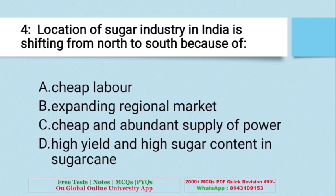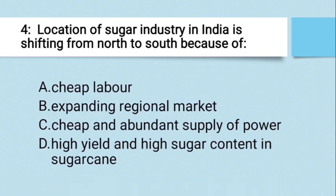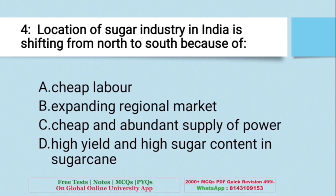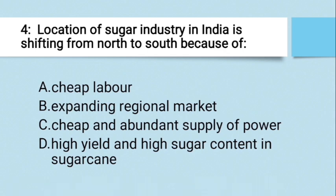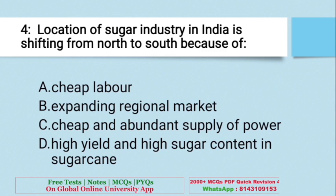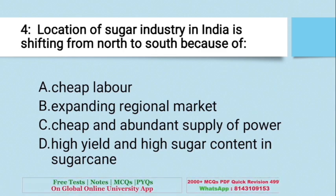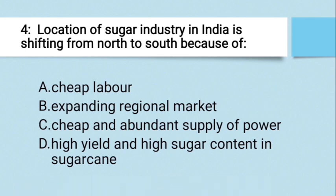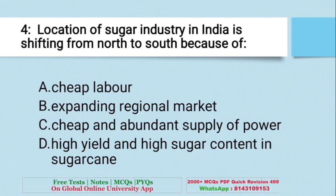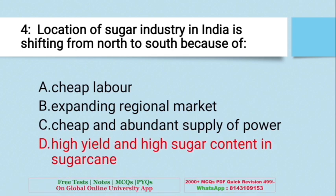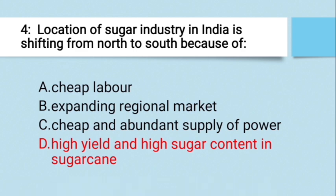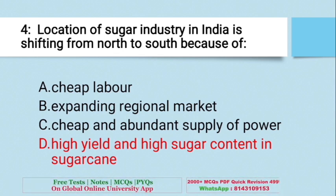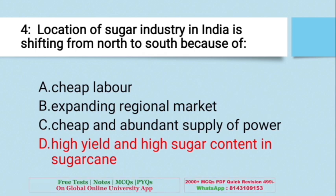Question: Location of sugar industry in India is shifting from north to south because of — A. Cheap labor, B. Expanding regional market, C. Cheap and abundant supply of power, D. High yield and high sugar content in sugarcane. The right answer is D — high yield and high sugar content in sugarcane. In the south, sugarcane has higher sugar content, so sugar factories from north India are shifting to south India.